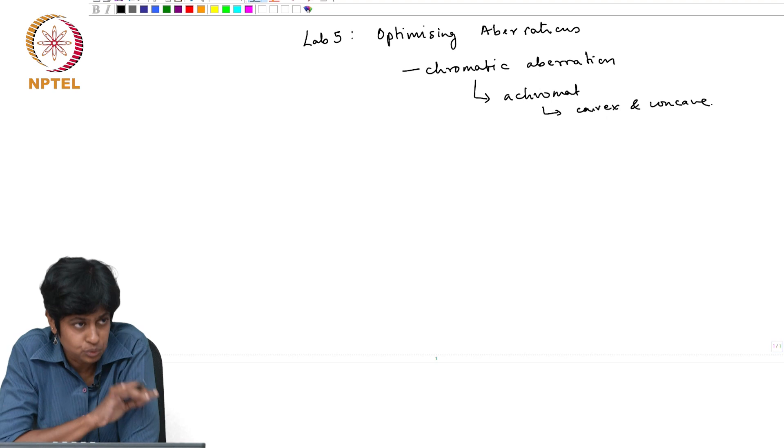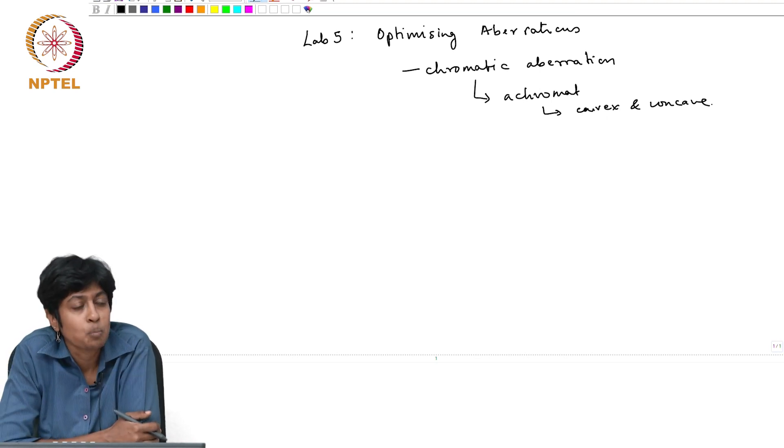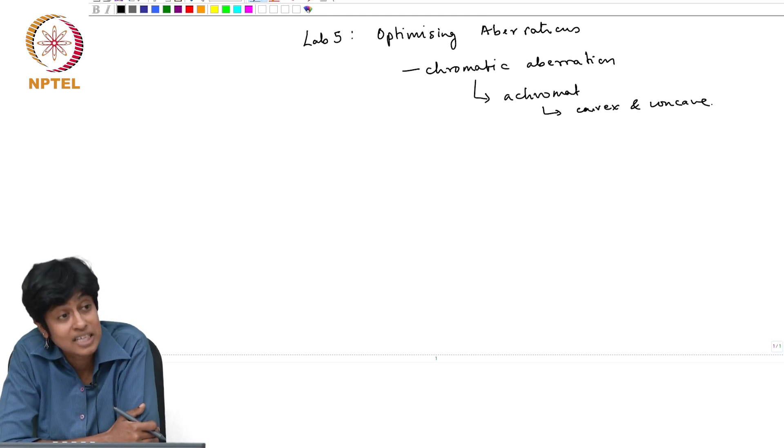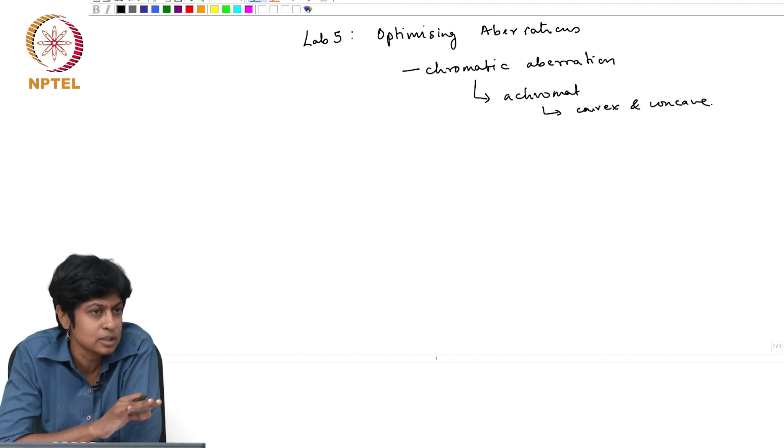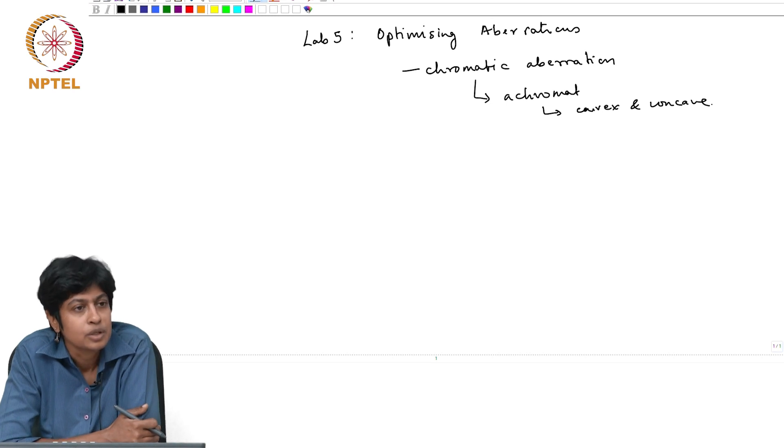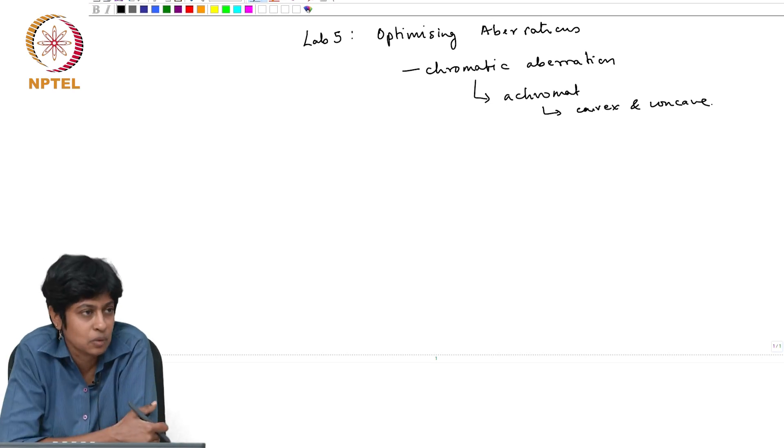Now, we are of course still going to do that. You are going to take a convex and a concave lens, but one of the exercises that you are given for this afternoon session is how to optimize the glass type. I just said you will take two different glasses, one will be a low dispersive glass, one will be a higher dispersive glass, and then you work out what are the focal lengths required for these two. But Oslo also gives you the opportunity to optimize the glass type itself.